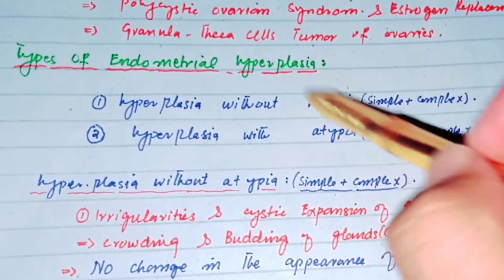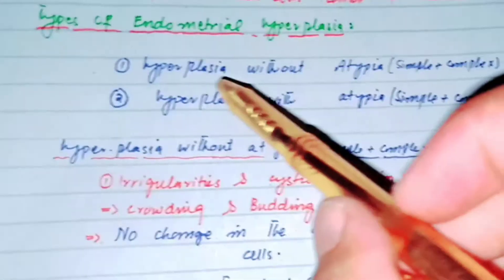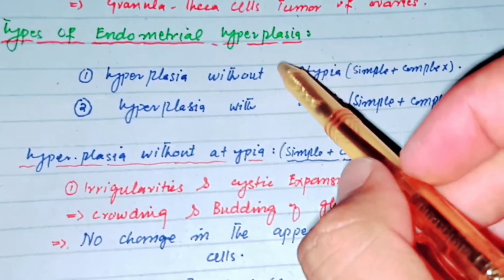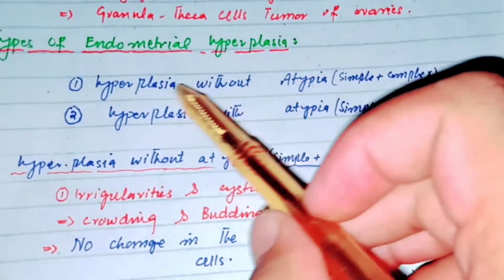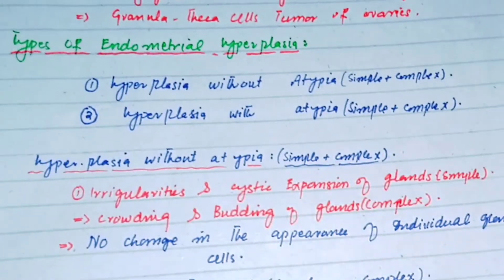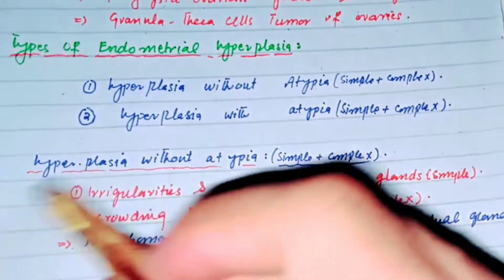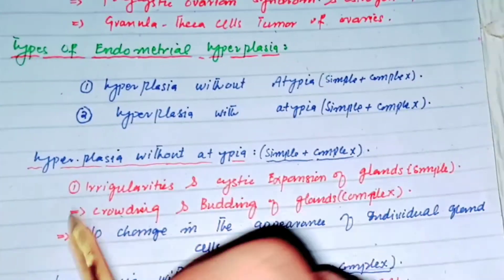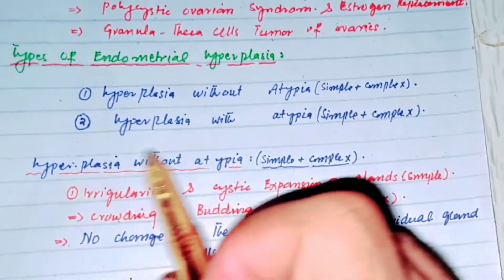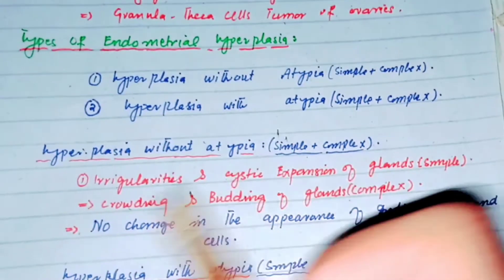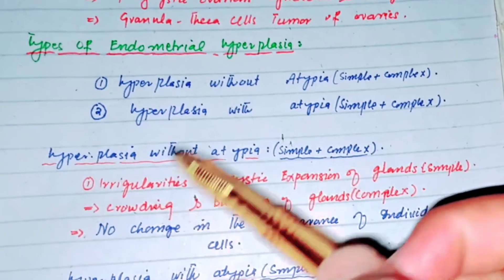In hyperplasia without atypia, there is no change at the cellular level — only the cell number is increasing. Simple hyperplasia without atypia involves irregularity and cystic expansion of the endometrial glands. Complex hyperplasia without atypia also features irregularities and cystic expansion of the glands, but with more complex architectural changes, still without any cellular atypia.